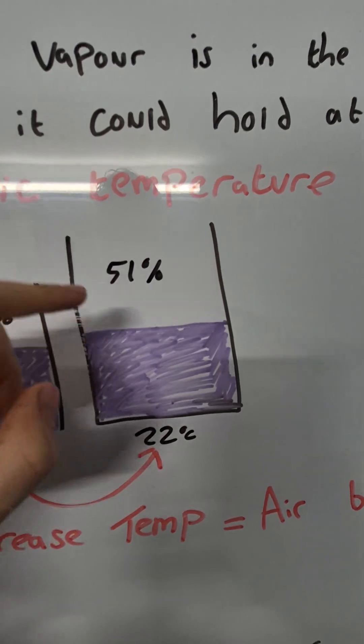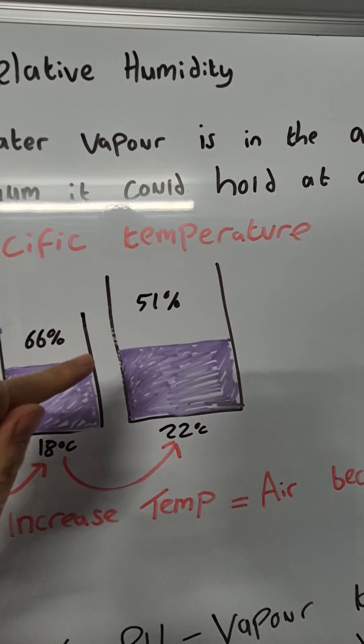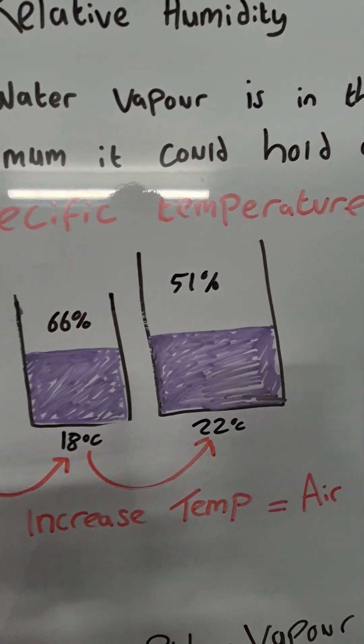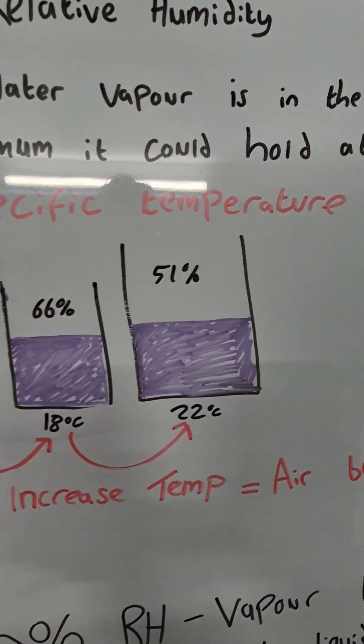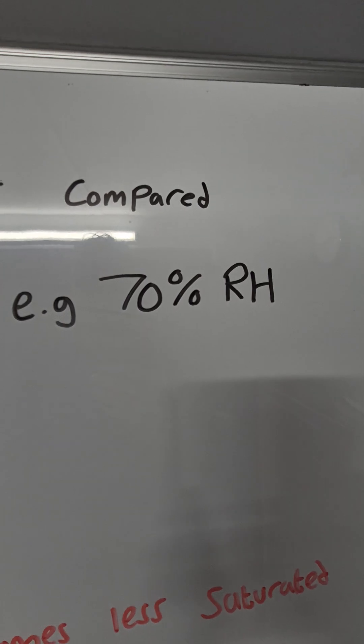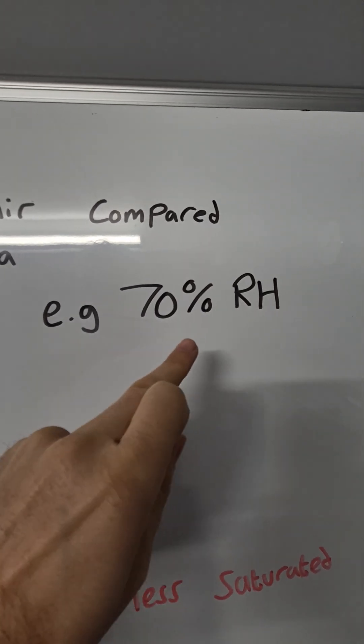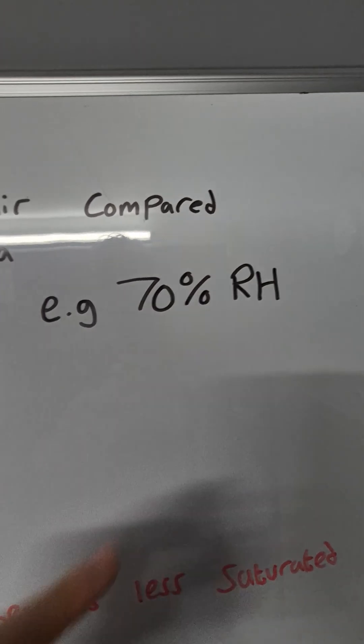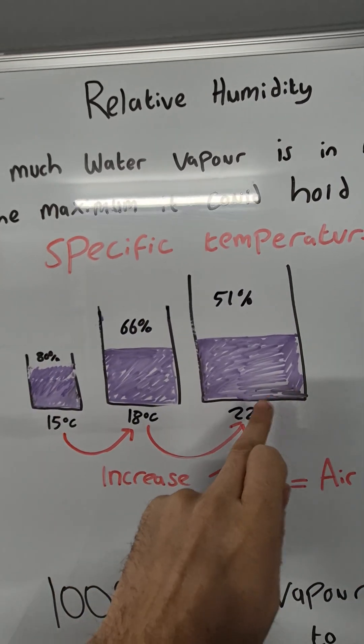It drops even more. So we're further away from being at saturation point of the air. Now, this is great because when it comes to mould and things like that, mould likes roughly over 70% RH on average. So the key is, let's keep it below 70% RH and we can do this by having warmer air.